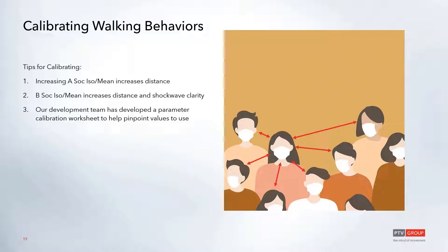B social isotropic and B social mean increase density as well to a lesser degree, but they also control shockwave clarity. If we're talking about queuing, for example, they will have a bigger impact in single file or banding or conflicting flows. You'll see that reverse shockwave parameter happening there.